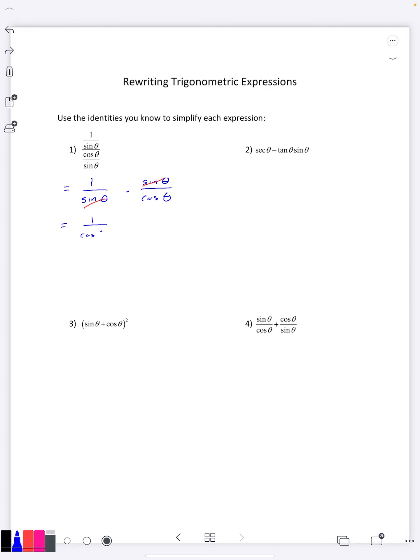We're left with one over cosine theta, and if we use the reciprocal identity, one over cosine theta is secant theta. So that means this original expression here is really a complicated way of writing secant theta. That's what we just showed.